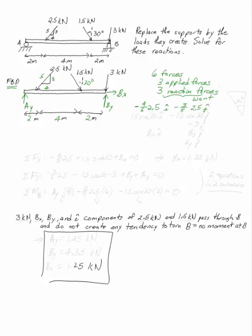The second one is 1.5 sine 30i minus 1.5 cosine 30j. If you need to, make a bigger picture. This is 30. That means that the j component is the cosine part. You also have this minus three kilonewton load in the j direction applied at b.